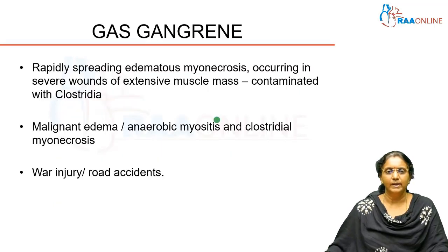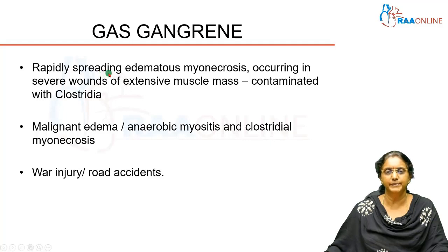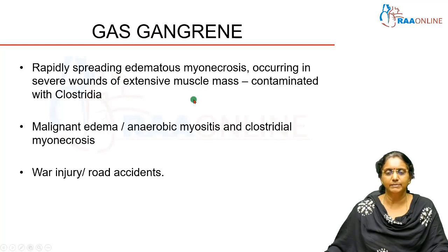Gas gangrene is defined as a rapidly spreading edematous myonecrosis. It occurs in severe wounds involving extensive muscle mass that get contaminated with Clostridium. It spreads very fast — if you do not treat the patient, you will lose the patient. There is edema and necrosis of the muscle, hence 'myonecrosis.'